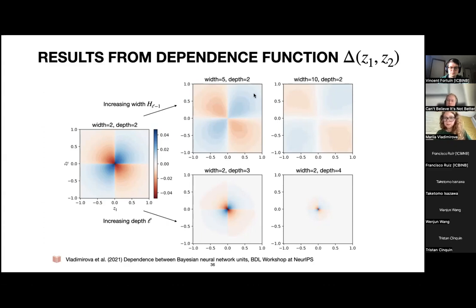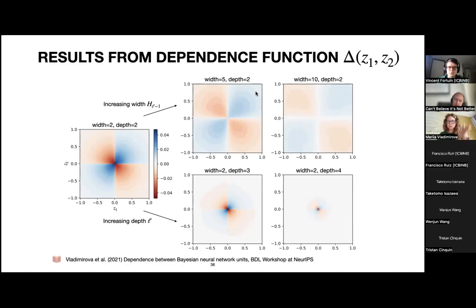There is a clarifying question in the chat: John M asks whether the covariance is on the output of the hidden layers or on the actual weight values. The answer is that it is on the outputs — this is all before training, when we only have the prior distribution and propagate through the network. The priors on the weights are assumed to be independent.